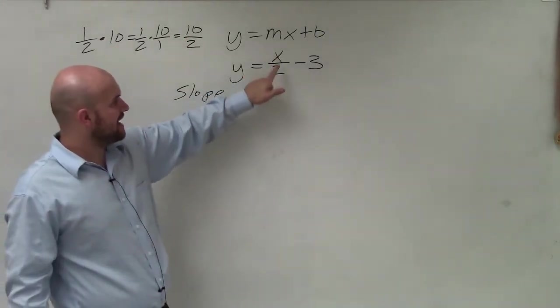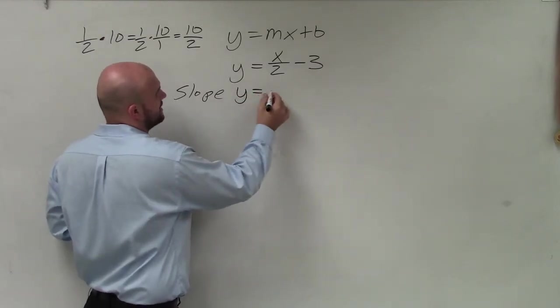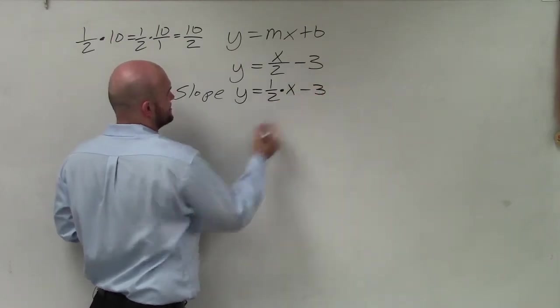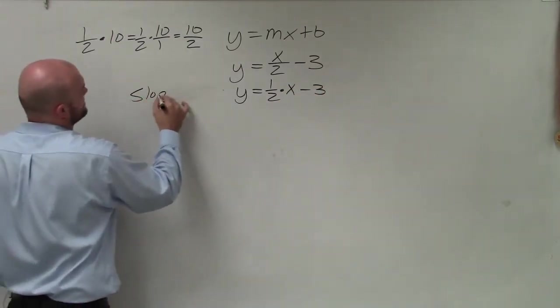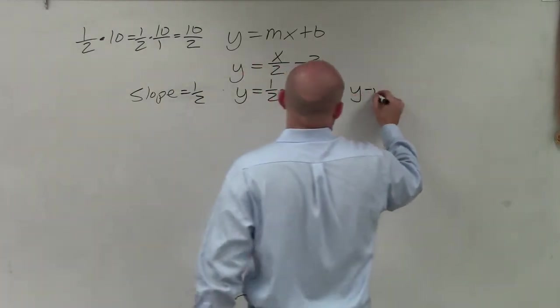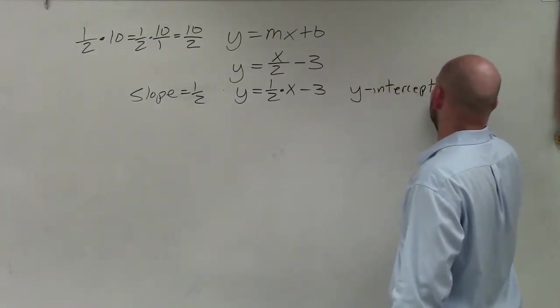Now in this case, I have x divided by 2. So to rewrite this, what I would like to do is rewrite this as y equals 1 half times x minus 3. Therefore, I can now identify the slope as being 1 half and my y-intercept equaling negative 3.